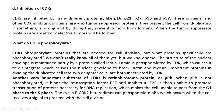For example, the structure of the nuclear envelope is maintained partly by a protein called Lamin. Lamin is phosphorylated by CDK, which causes it to disintegrate — which causes the nuclear envelope to break. In the same way, a second example is Actin and Myosin. These are important proteins in dividing and duplicating cells, and their activity is also controlled by CDK.